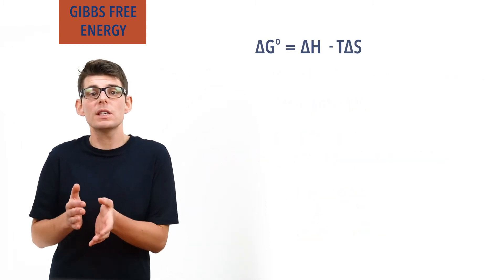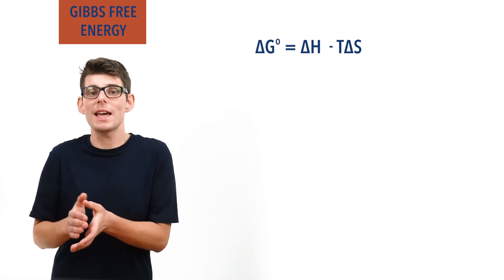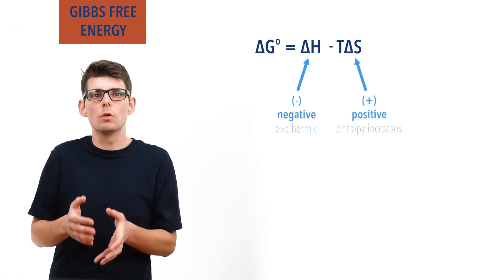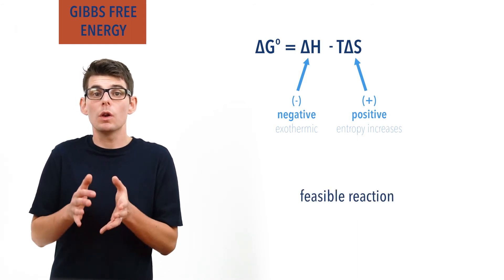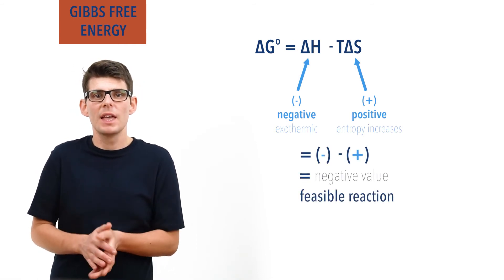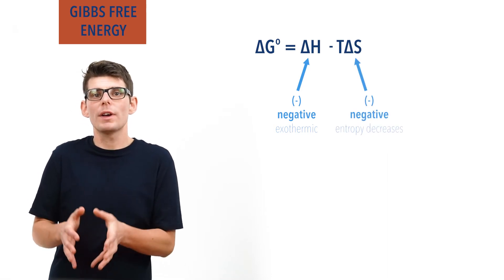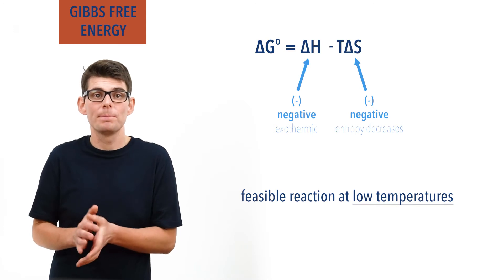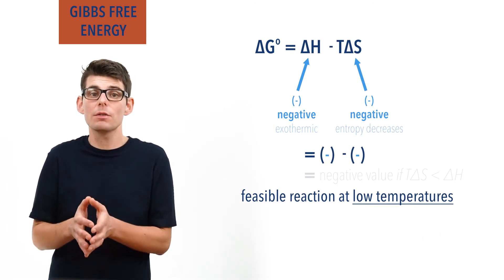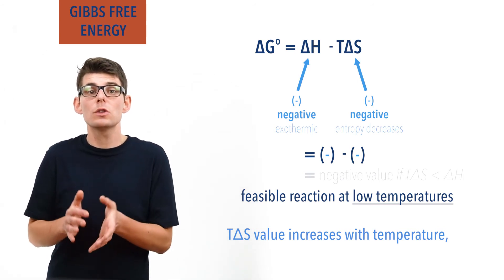Using the Gibbs free energy equation, there are a few key scenarios. If a reaction has a negative enthalpy change (exothermic) and a positive entropy change, the reaction will always be feasible, as the Gibbs free energy change will always be negative — a negative value minus a positive number gives a negative. If a reaction has a negative enthalpy change and a negative entropy change, the reaction can be feasible but only at low temperatures. A negative delta H minus a negative T delta S means as temperature increases, T delta S gets bigger and will eventually exceed delta H, making the result positive.